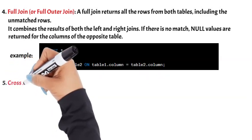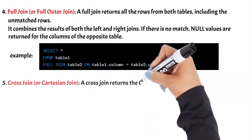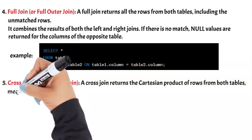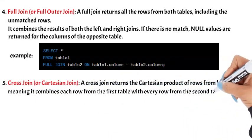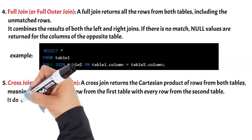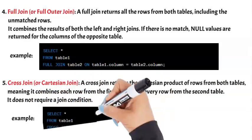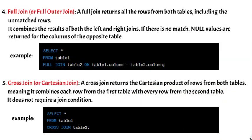5. CROSS JOIN (or Cartesian Join): A cross join returns the Cartesian product of rows from both tables, meaning it combines each row from the first table with every row from the second table. It does not require a join condition. In this example, the cross join combines every row from Table1 with every row from Table2, resulting in a combination of all possible pairs.